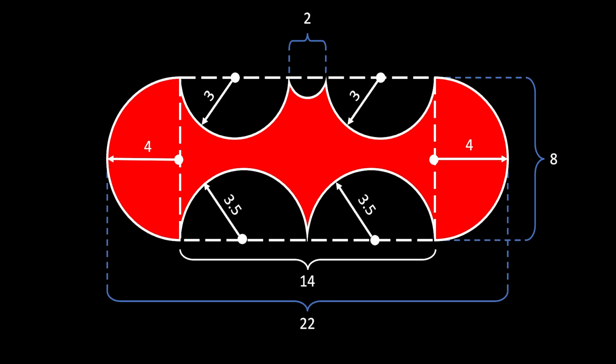Last but not least, we're left with the little semicircle between the Batman horns. Since its diameter is equal to 2, the radius of this semicircle must be equal to 1.